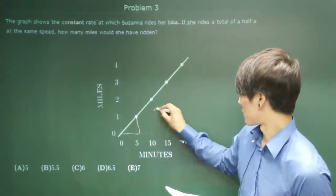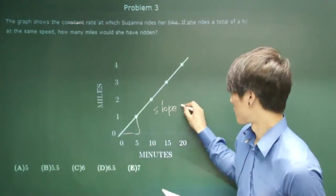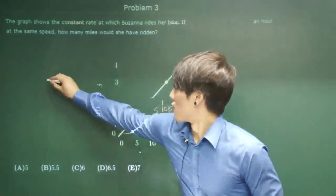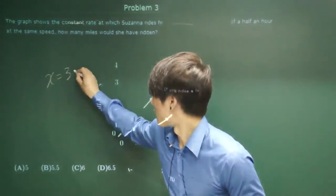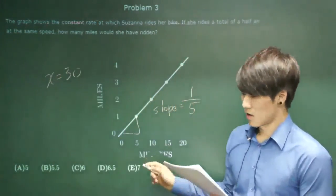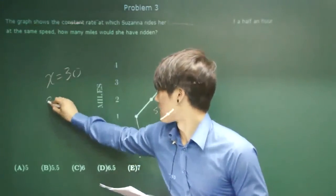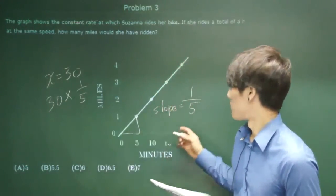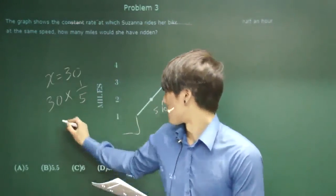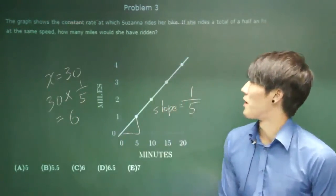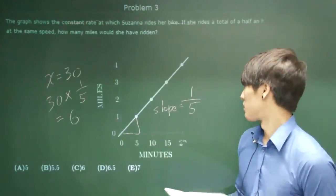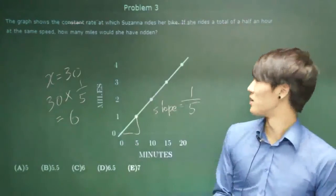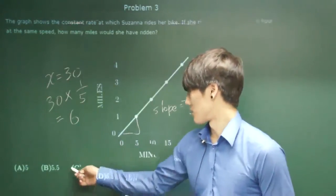you can see that the slope equals one over five. And when X equals 30, you'll be able to find that 30 multiplied by the slope would give you 6, which is the miles that she would have ridden. Because all you have to do is, you're just predicting what's going to happen on this line. So the answer is C.